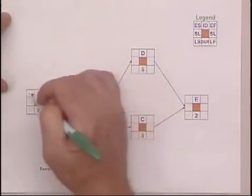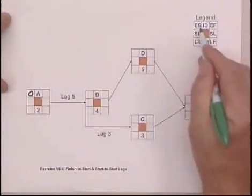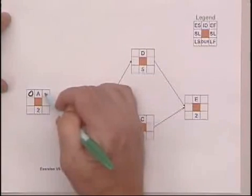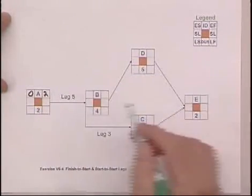So we begin, as we do with all networks, with a zero for the first activity as the early start. And A takes two days, so it's going to be done the earliest on the second day.